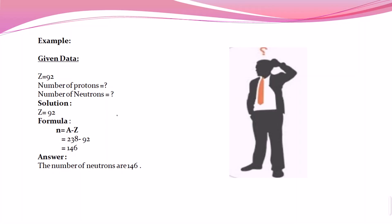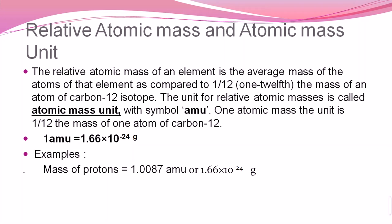Now let's look at relative atomic mass and the atomic mass unit. The relative atomic mass of an element is the average mass of the atoms of that element as compared to one-twelfth of the mass of a carbon-12 isotope. To understand this, imagine a circle divided into 12 equal parts — the carbon-12 reference is one of those twelve parts.